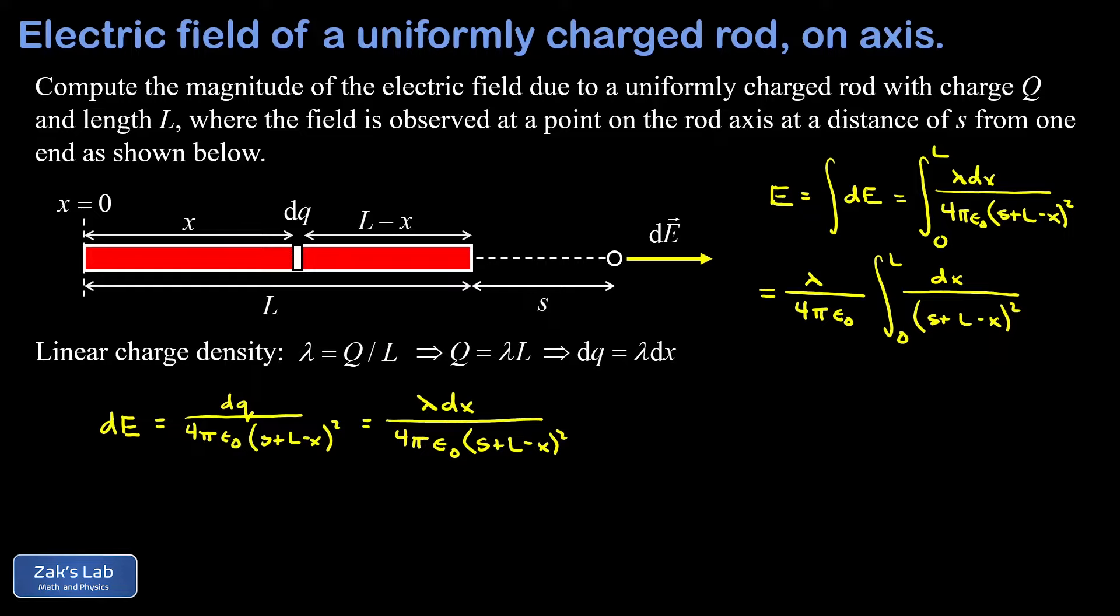Now this might look really complicated at first but actually we're looking at a simple power function type of integral. The only thing that's a variable in this expression in the denominator is x itself. Now that has a factor of negative one out in front of it because I have a minus x there and that means the derivative of the interior function is negative one and we can take care of the chain rule there by putting a minus sign into the numerator. We have to compensate out in front by putting a minus sign in front of lambda but then we're ready to guess the antiderivative.